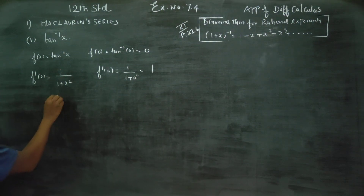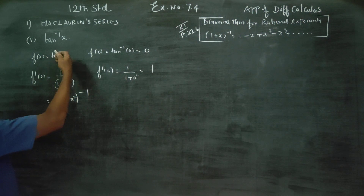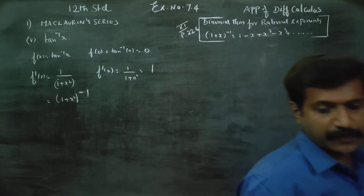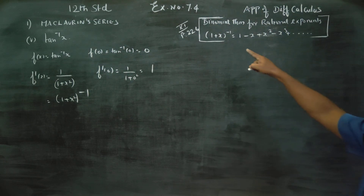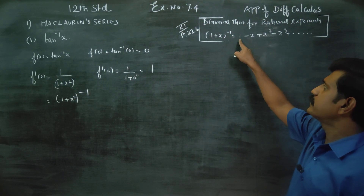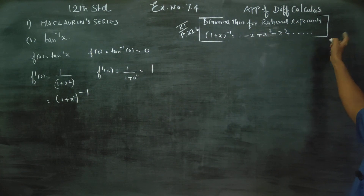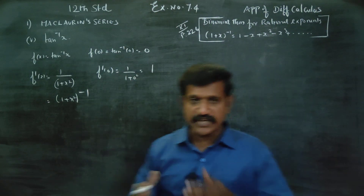This is the simplification. In the expression 1 plus x squared, we work through successive differentiation. The denominator involves 1 plus x squared, and squaring that gives 1 plus x squared squared, which equals 1 plus x squared.